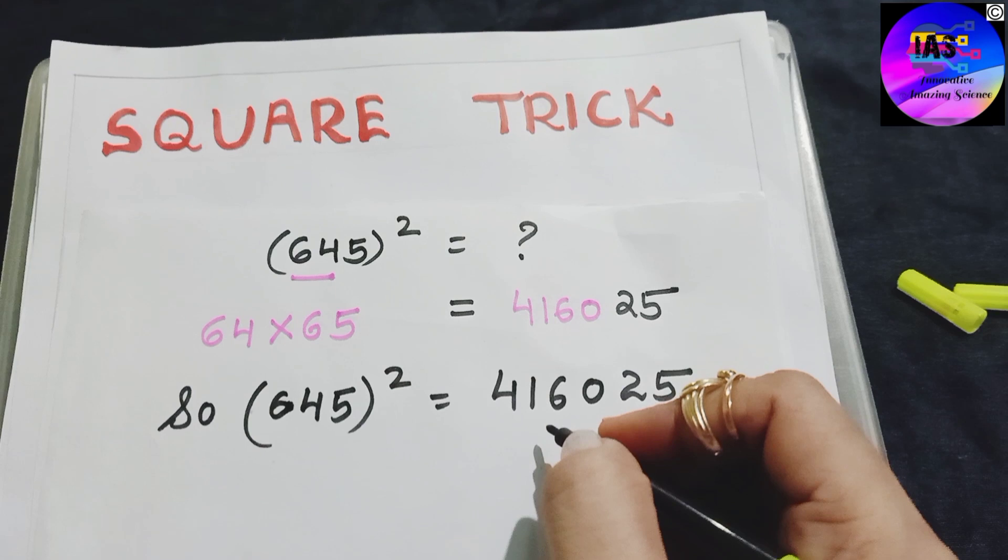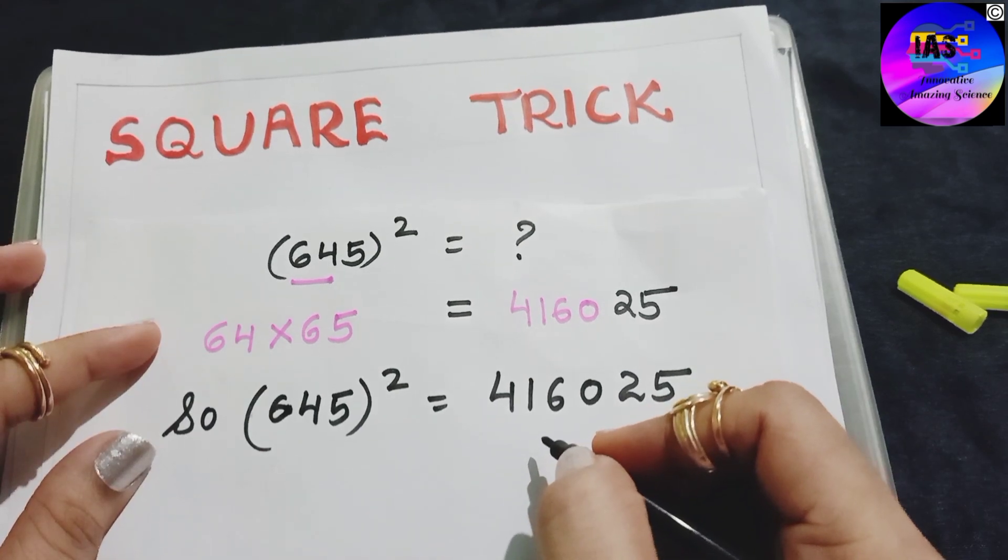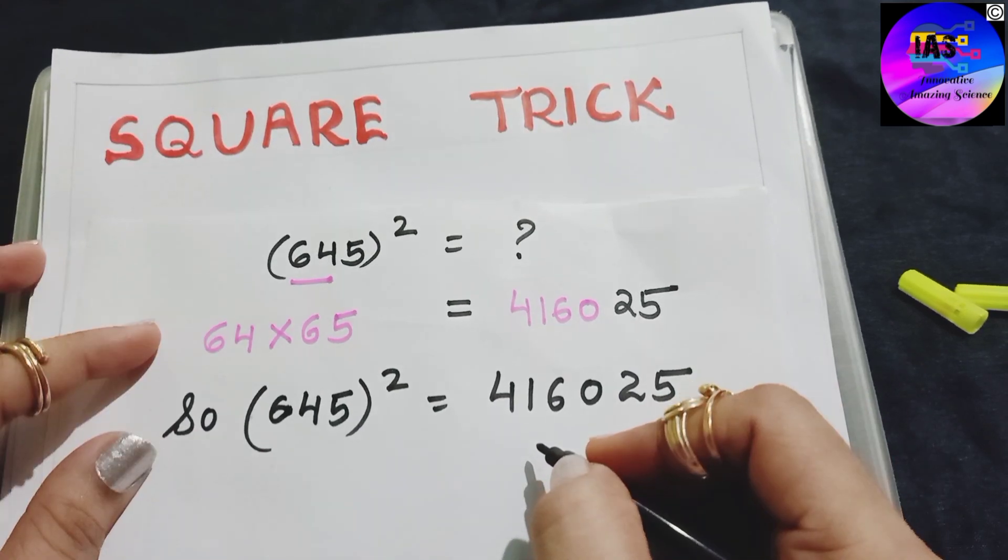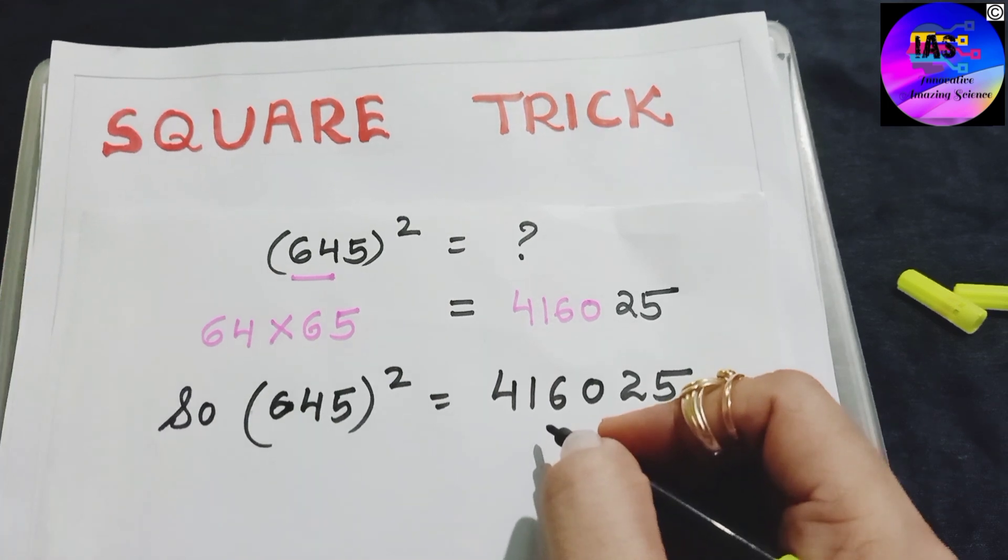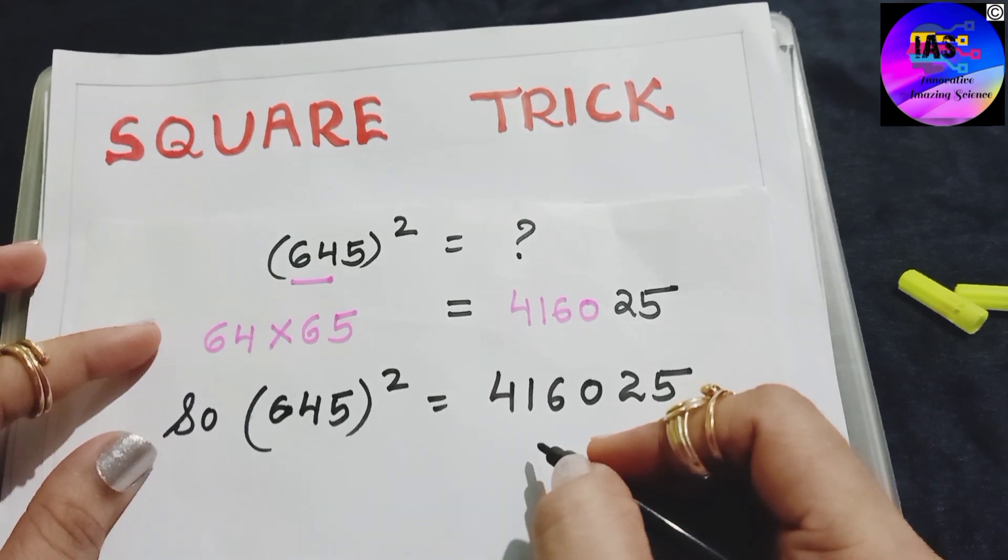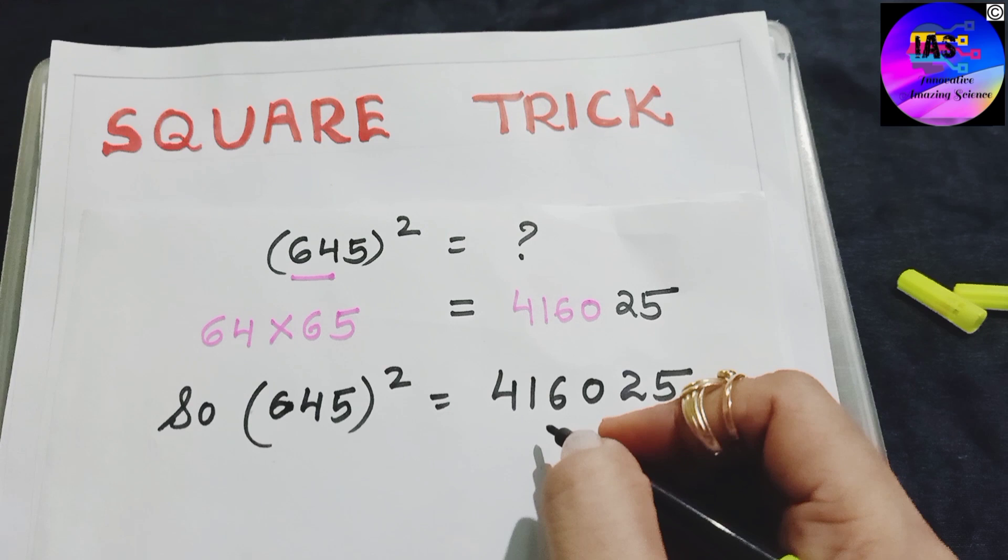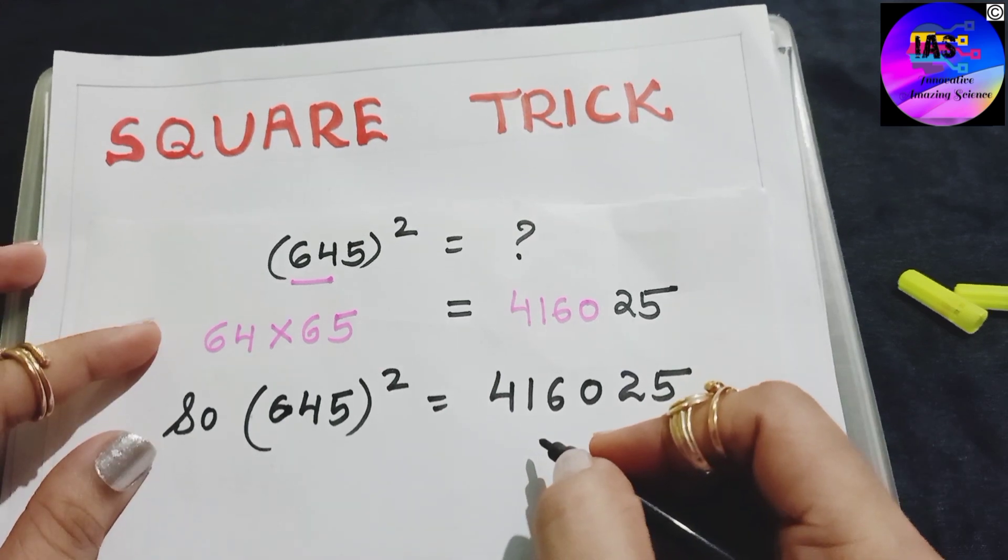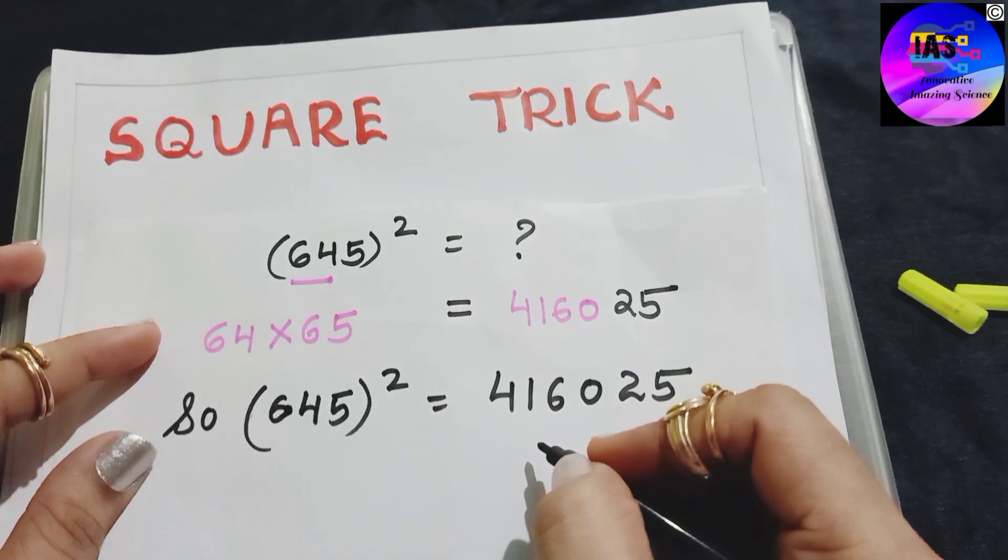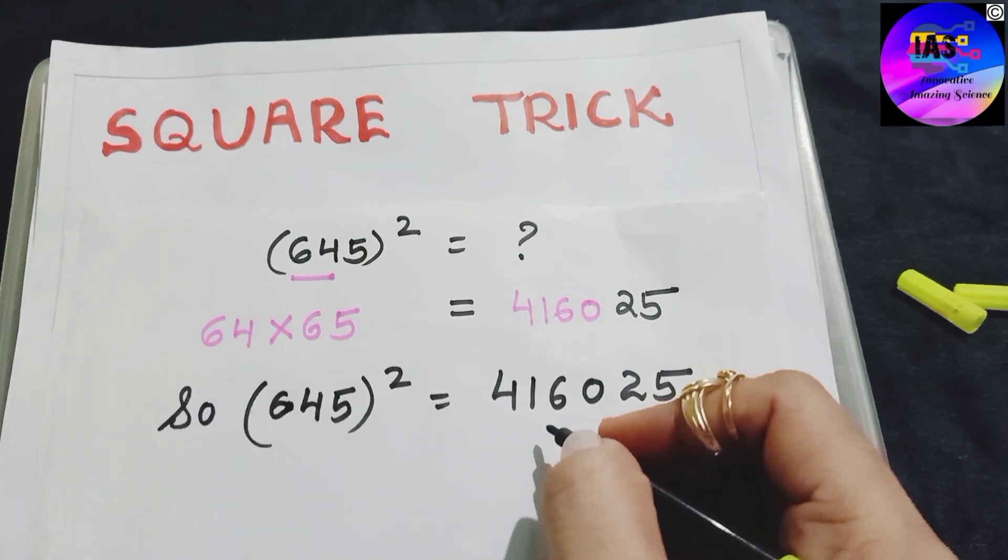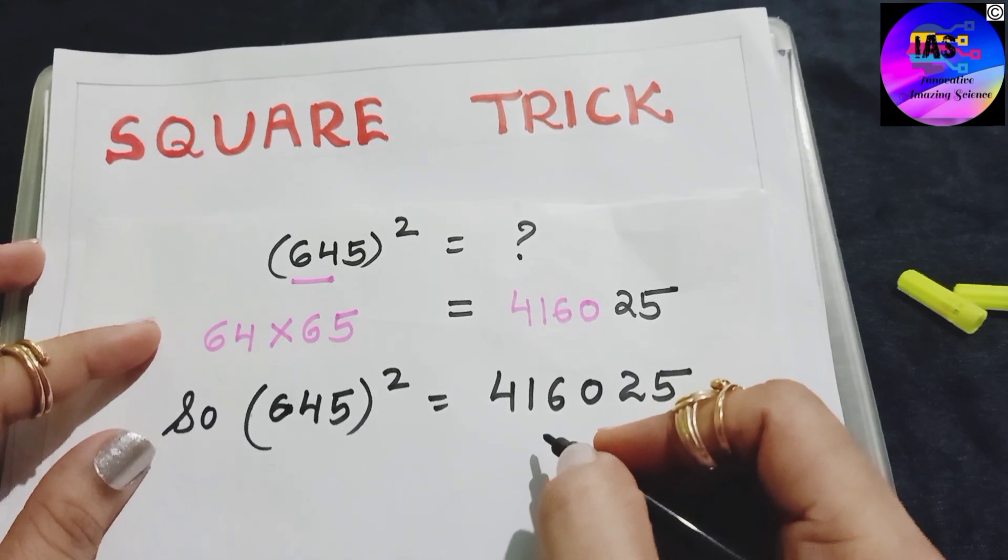Then we will observe whatever number is left behind after removing 5. So here 64 was left behind after removing the units place. With that 64 we have to multiply with its successor.